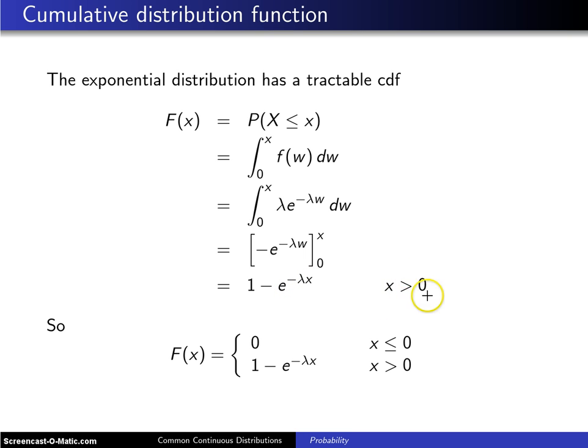And there it is on the support x greater than 0, which is the more interesting part. But when you write out capital F of x you want to write it carefully in this fashion. Capital F of x will be 0 for all negative x values and it will be 1 minus e to the minus lambda x for all x values greater than 0.